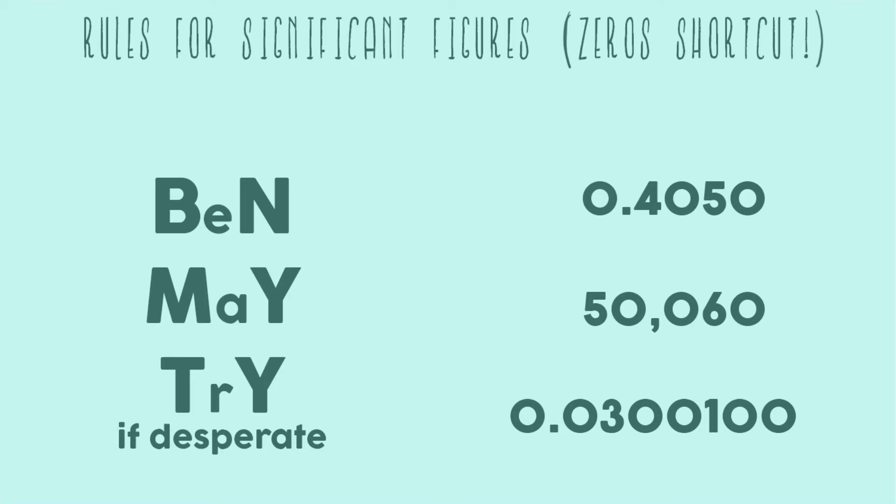The numbers one through nine are easy. This is a mnemonic that I made up that I hope helps you. Okay, so the mnemonic is Ben may try if desperate and this entire mnemonic is only talking about sig fig zeros.